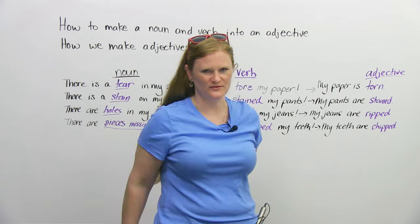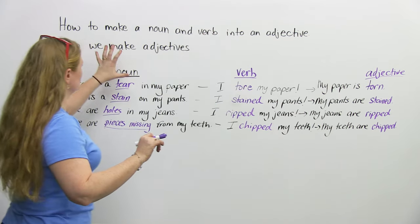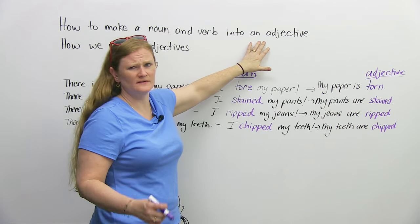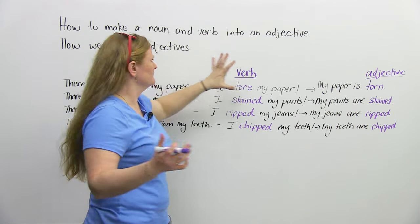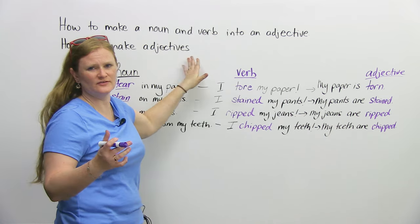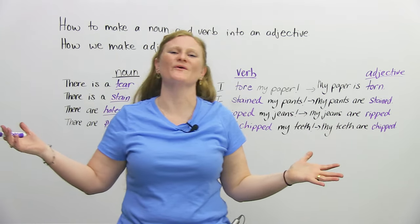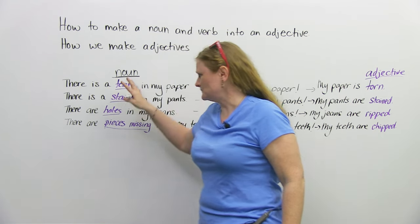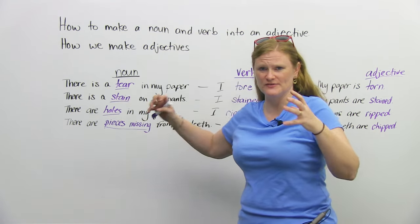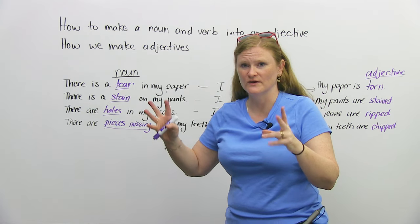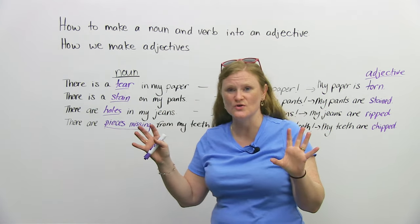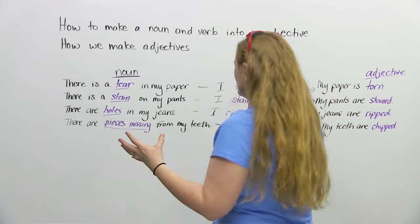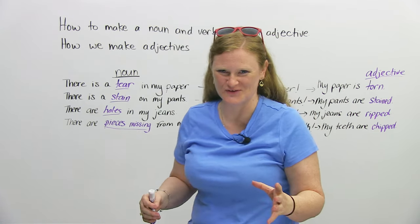I'm going to do some magic tricks. The magic trick is how to make a noun and/or a verb into an adjective — so how we make adjectives, or how adjectives are born: the birth of an adjective. I'm going to go through some example sentences that have a noun, we're going to change the noun, use the sentence as a verb, and then, magically, change this into an adjective.